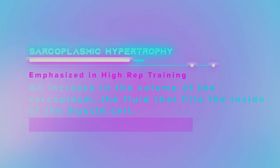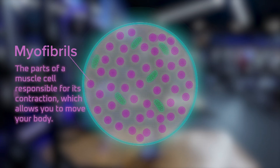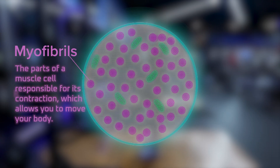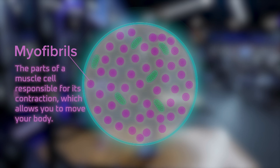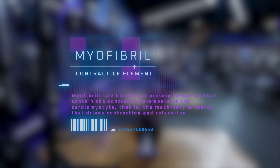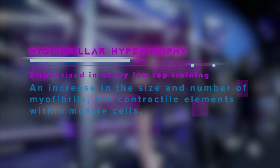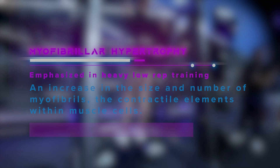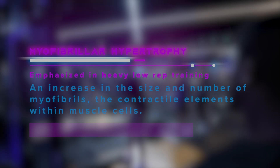Then you have myofibrillar hypertrophy. The myofibrils are the organelles that are the contractile elements of the cell, filling up the sarcoplasm. They're scattered throughout the cell and are responsible for the actual muscle contraction. Myofibrillar hypertrophy refers to both the enlargement of the myofibrils and the increase in their number.